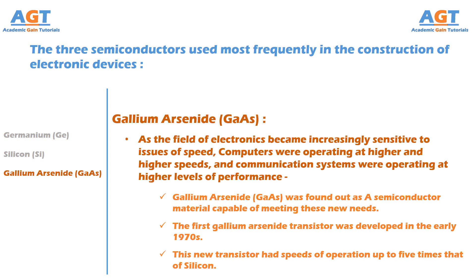But silicon transistor networks, for most applications, were cheaper to manufacture and had the advantage of highly efficient design strategies, because of the years of intense design efforts and manufacturing improvements using silicon, before gallium arsenide semiconductors came to market.